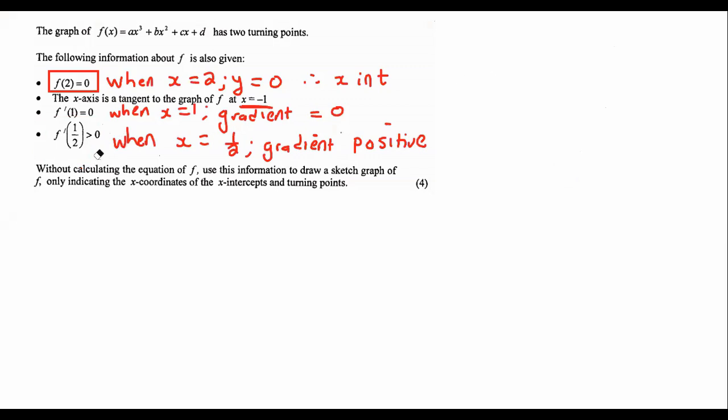Quite a weird question. It now says, without doing any calculations, draw a graph indicating all of the x-coordinates, the x-coordinates of the x-intercepts and the turning points. So we've got to take this information and we've got to try to get a nice graph.